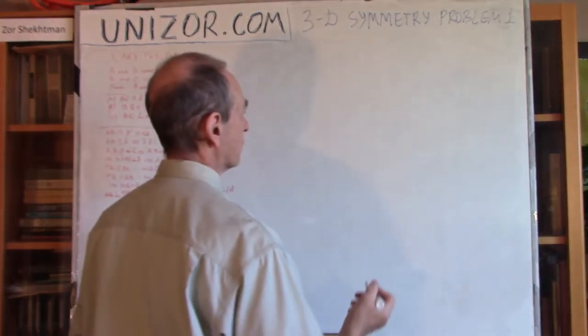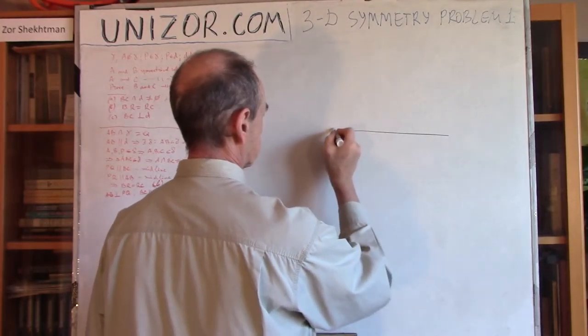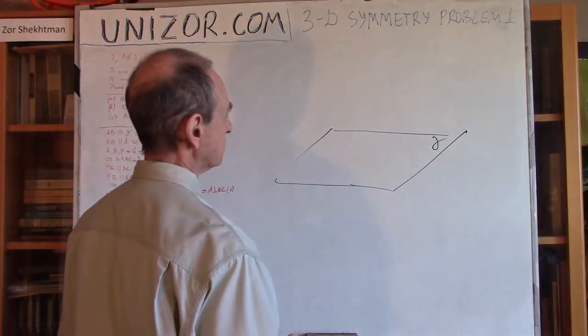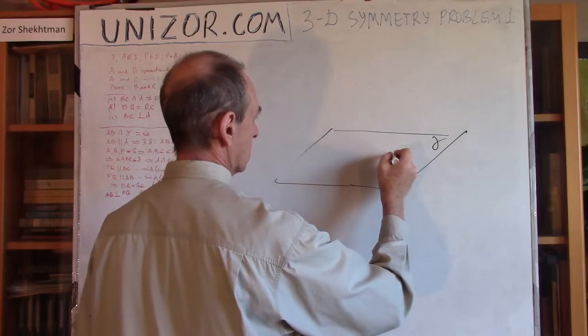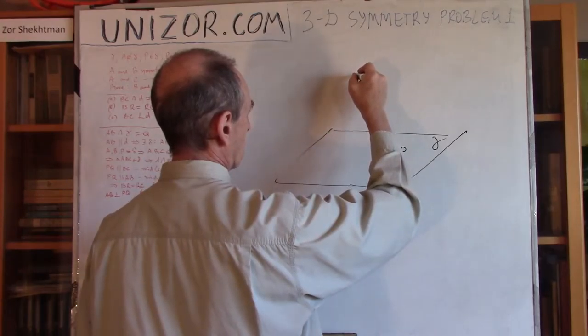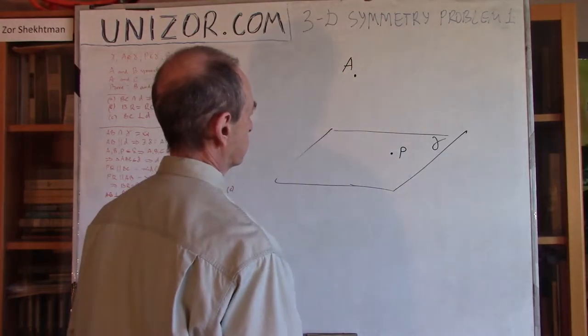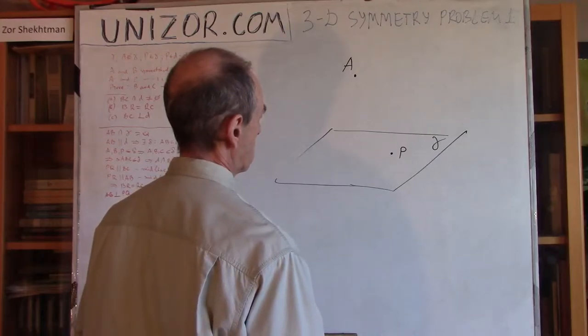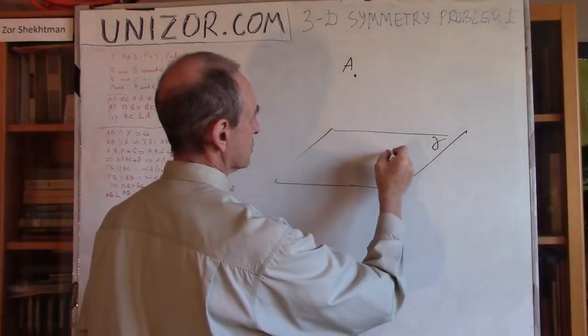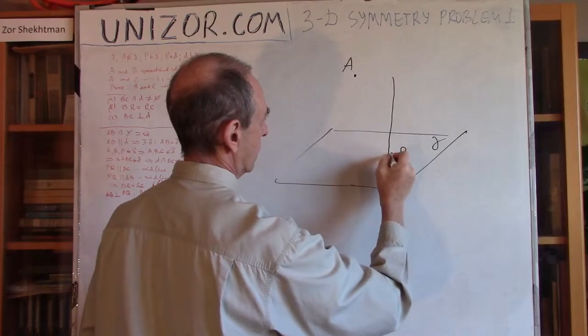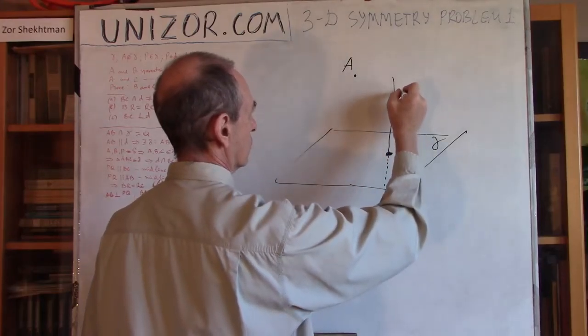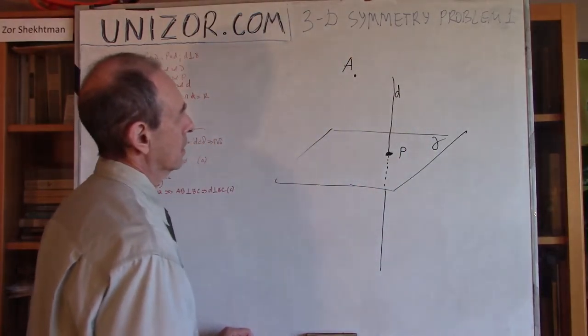Let's assume we have a plane, let's call it gamma. We have one point P on the plane, and we have one point A outside of the plane. Now I'm going to introduce a perpendicular to the plane at point P. Let's call it D.